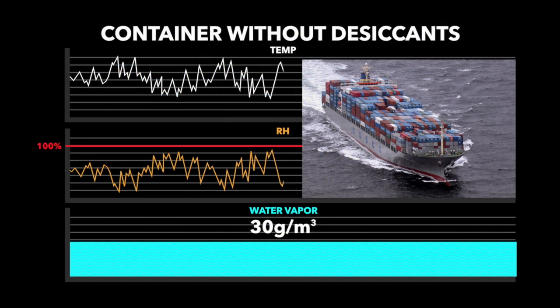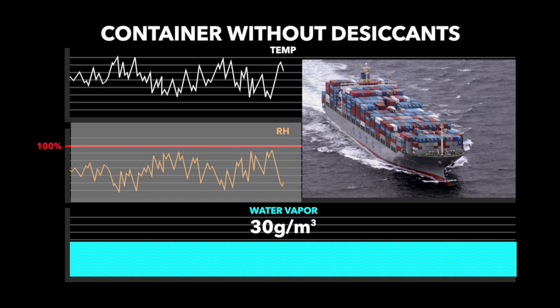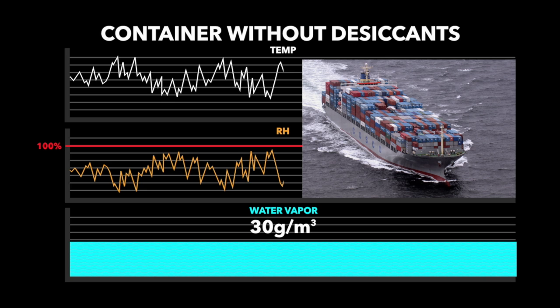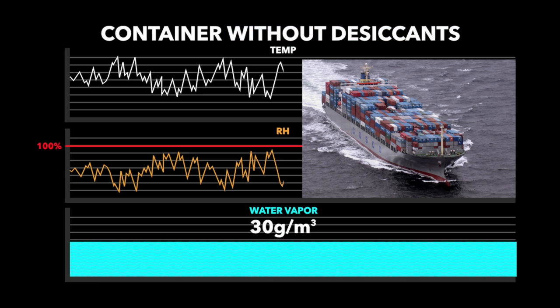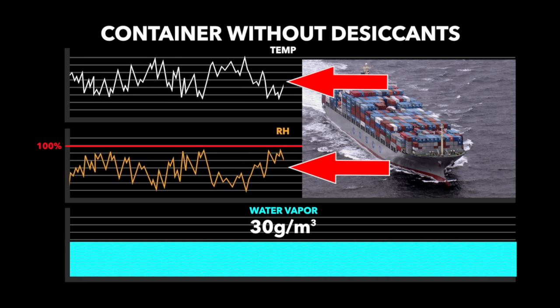The following charts show the changing relationship between the temperature, the RH, and the amount of water vapor in the air inside a container during a voyage without desiccants in use. The amount of water suspended in the air in this example is 30 grams per cubic meter. As long as the temperature remains the same or rises, the RH, or relative humidity, will remain below 100%, preserving the air's maximum ability to suspend water as a vapor.